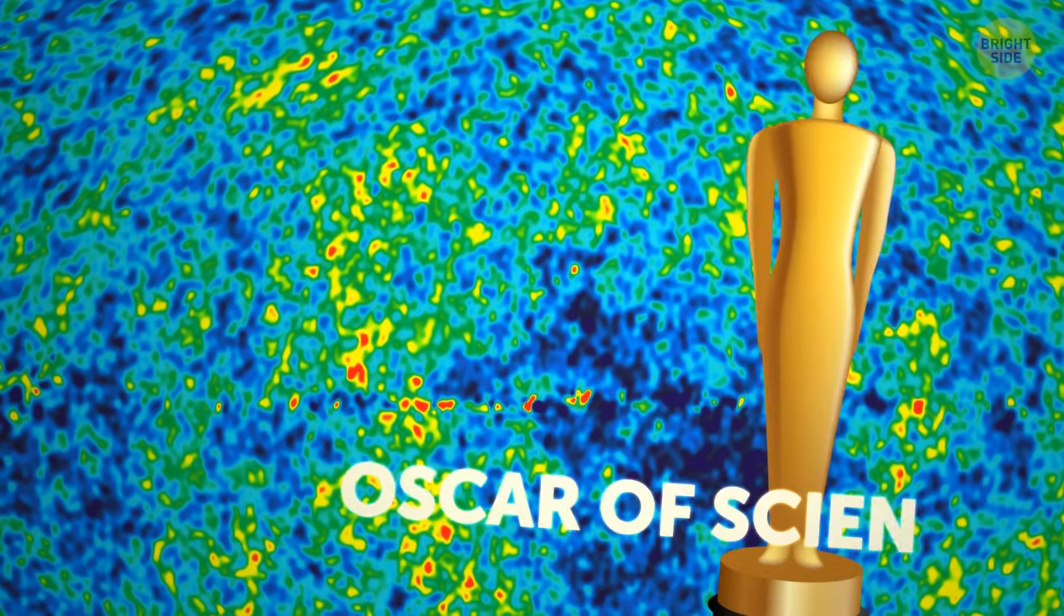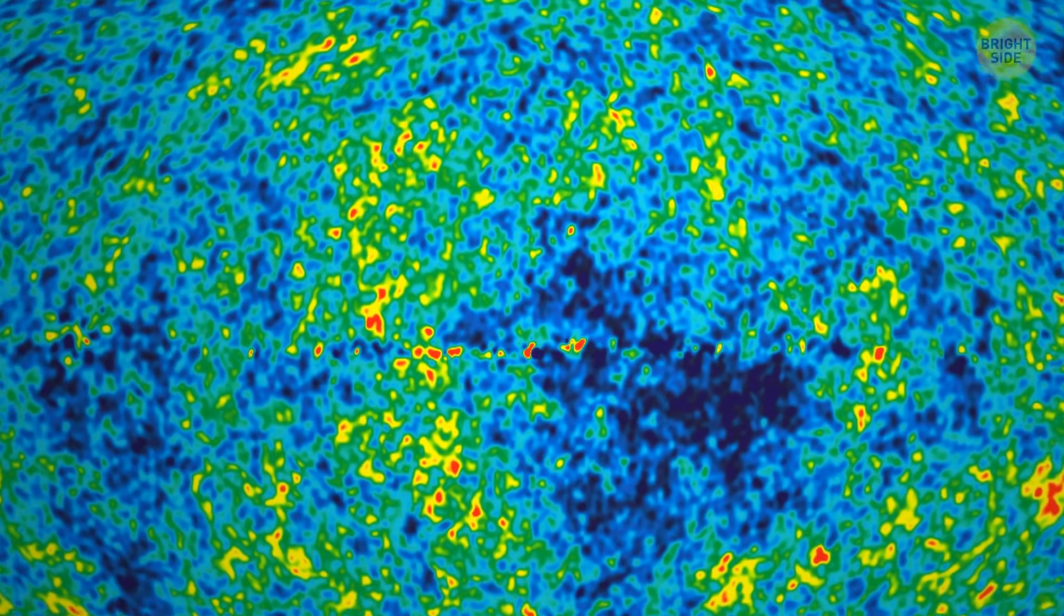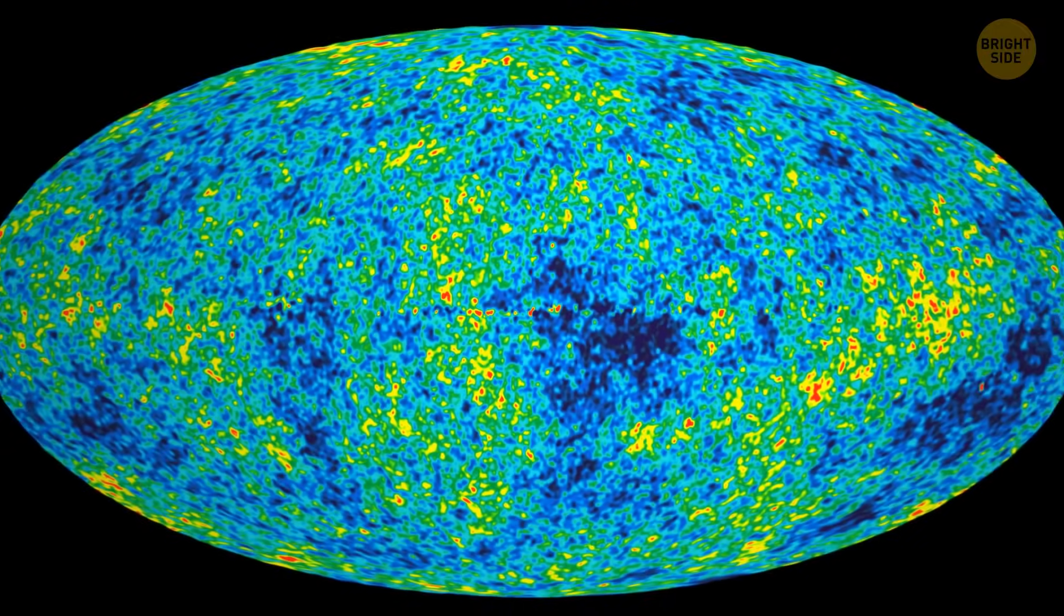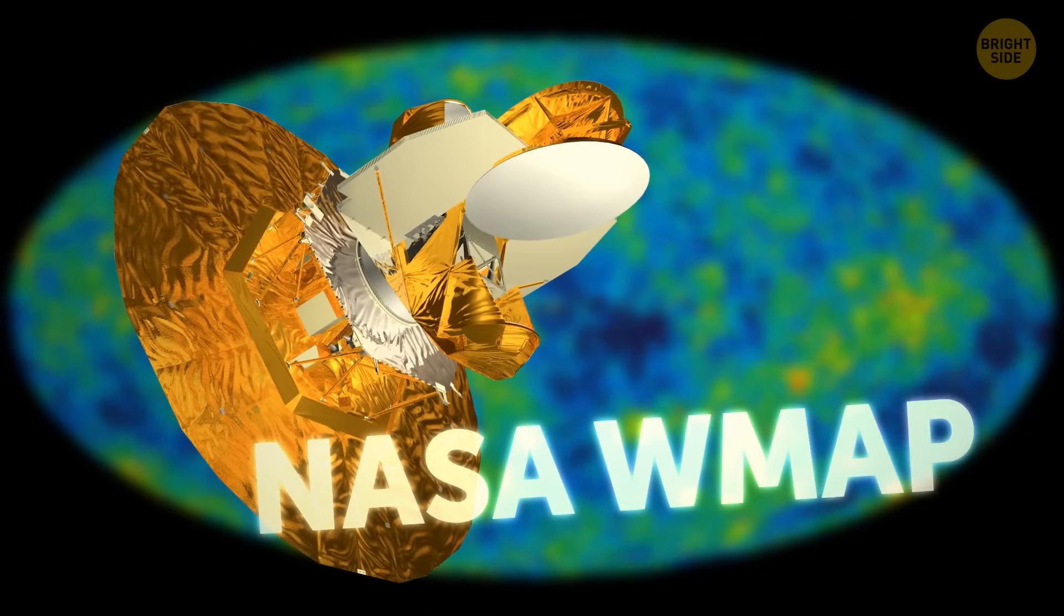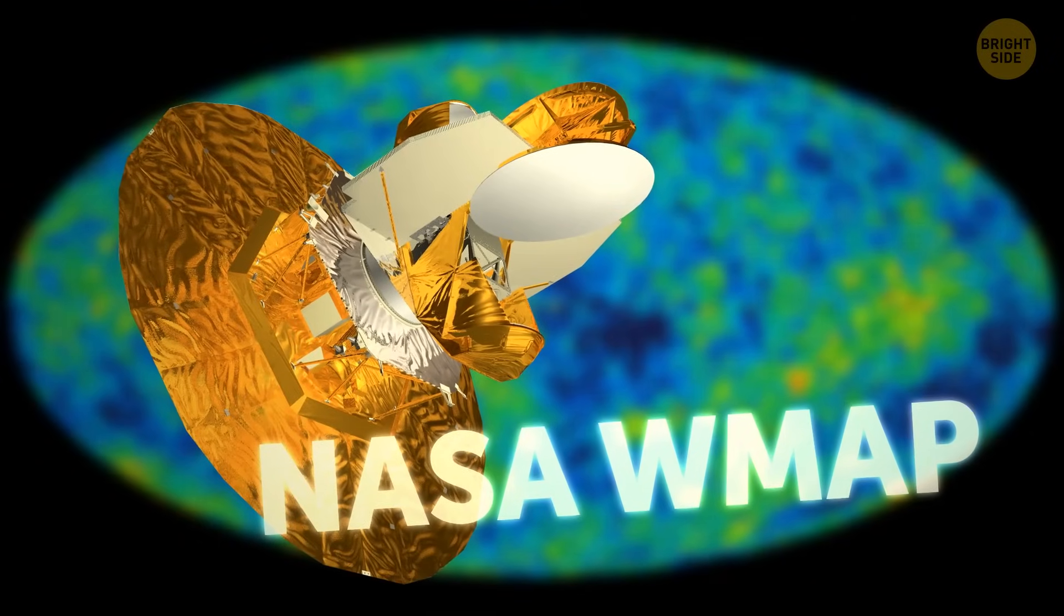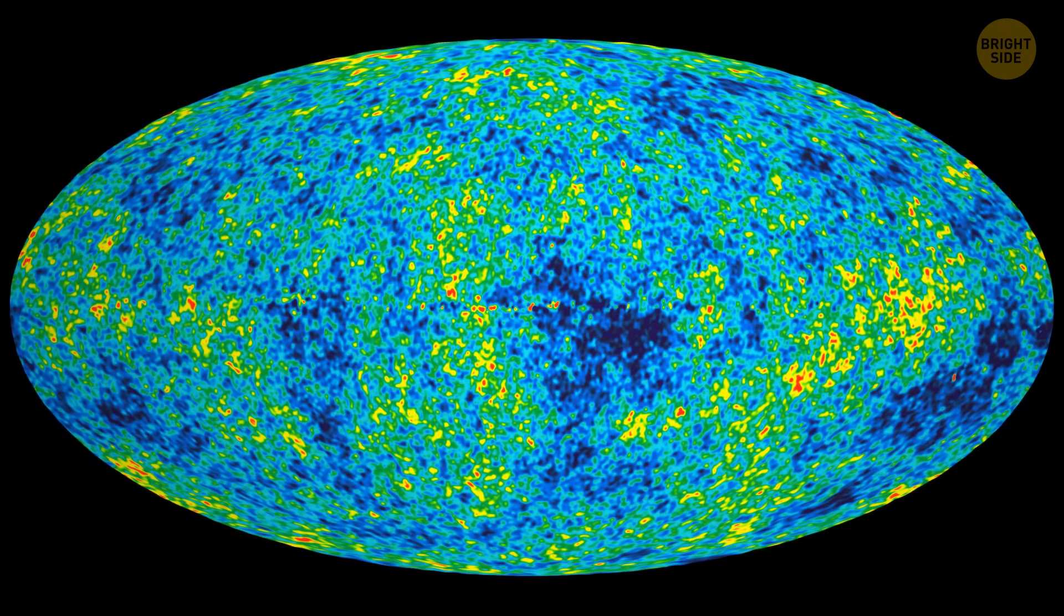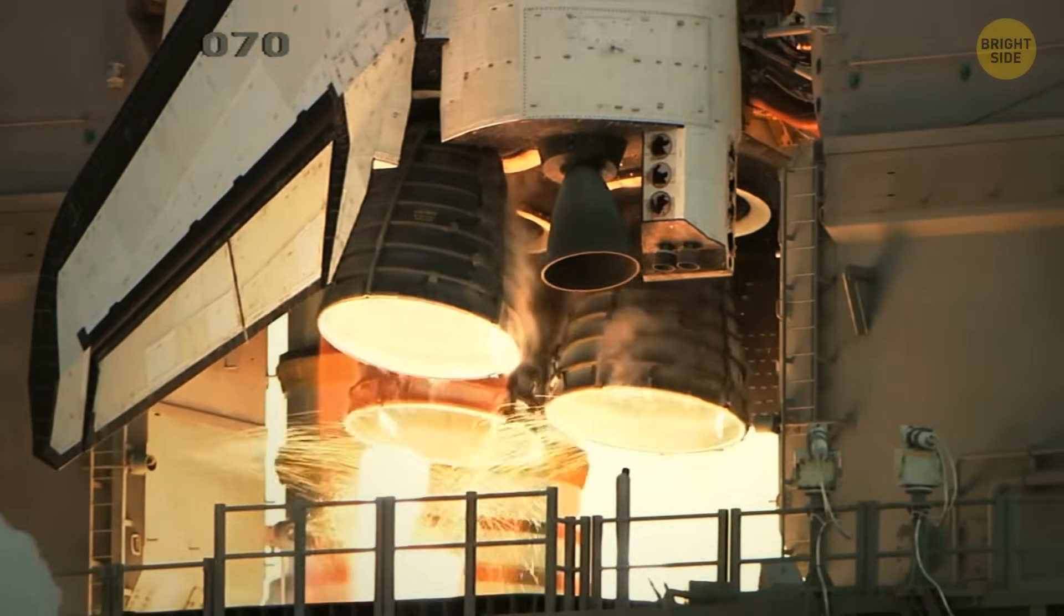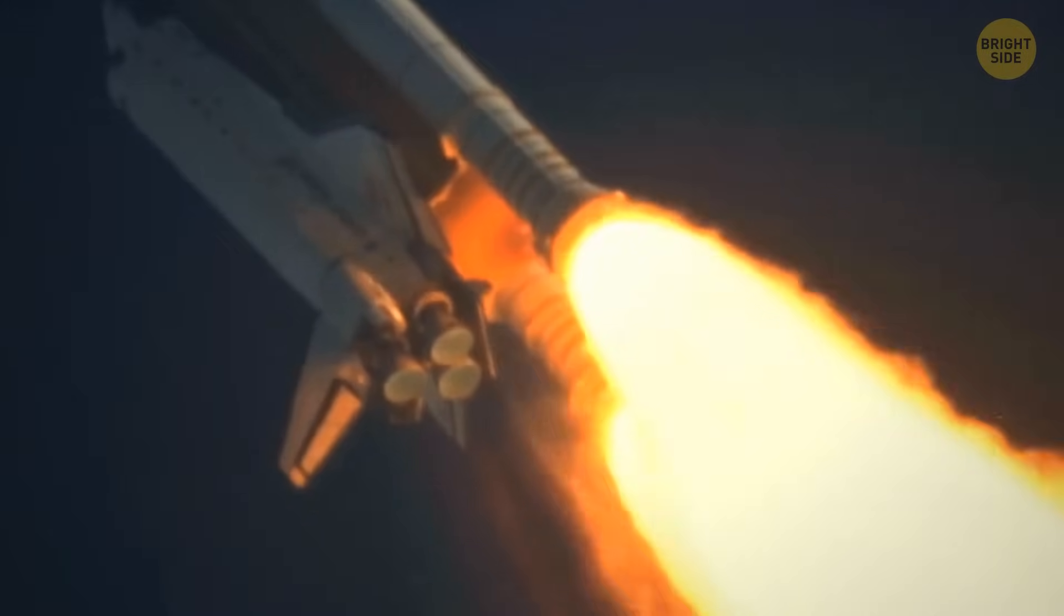Imagine winning the Oscars of science for a picture that shows the entire universe when it was just a baby. Scientists achieved this fantastic feat using NASA's Wilkinson Microwave Anisotropy Probe. To take this picture, they built a super cool satellite, launched it into space, and collected massive amounts of data about the universe.